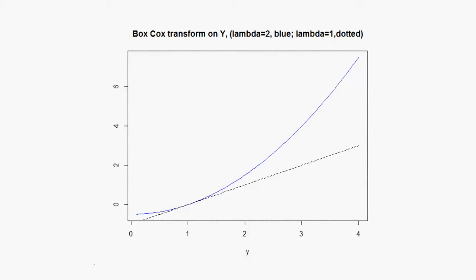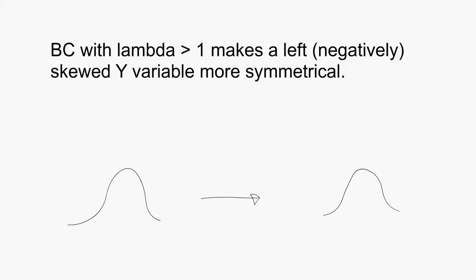The same story goes for any lambda greater than one. And so BC with lambda greater than one makes the left negatively skewed Y more symmetrical.